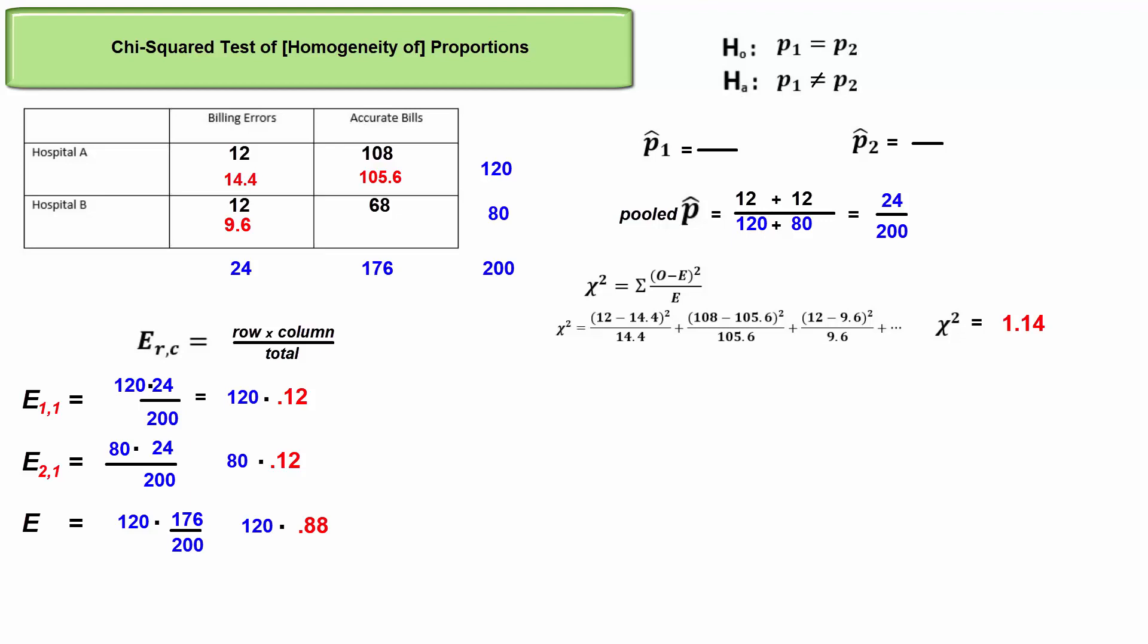We compare this to the critical chi-squared value. We need degrees of freedom for these last two types of chi-squared tests. It's going to be row minus one times column minus one. We have two rows minus one and two columns minus one, so the degrees of freedom is just one.